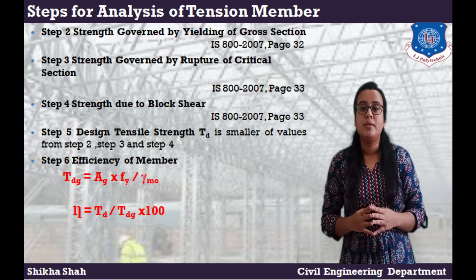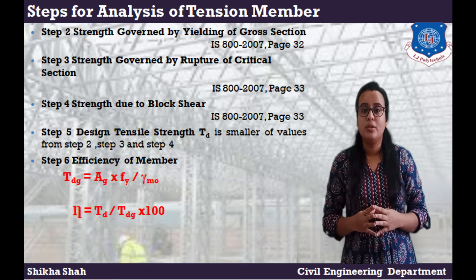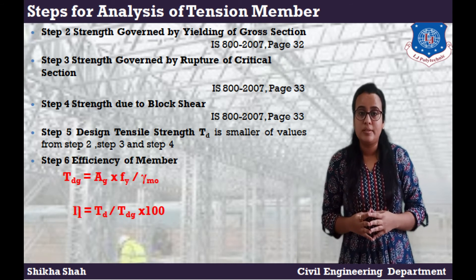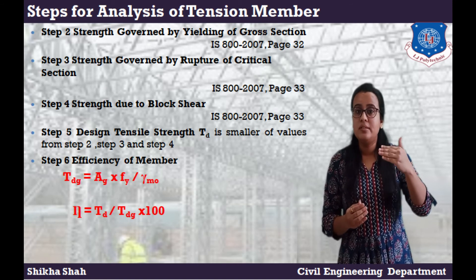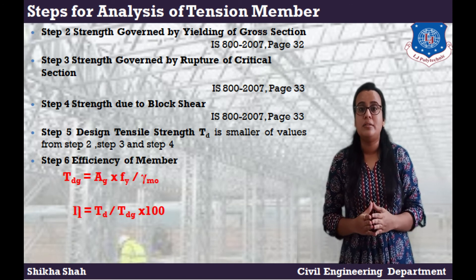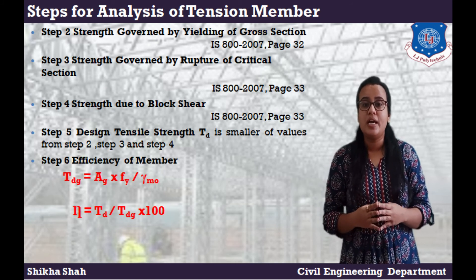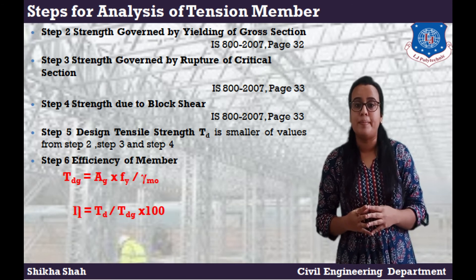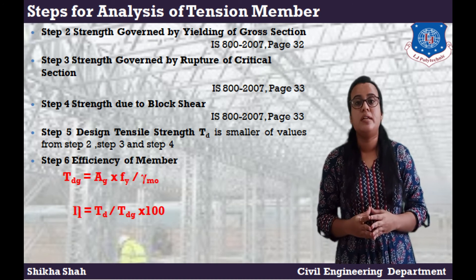Step 2 — Strength governed by yielding of cross section (page 32). Step 3 — Strength governed by rupture of critical section (page 33). Step 4 — Strength due to block shear (page 33). From these three values, the design tensile strength Td is the smaller value, which should be greater than T. The efficiency of the member is given by η = (Td / Tdg) × 100, expressed as a percentage.